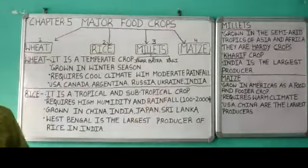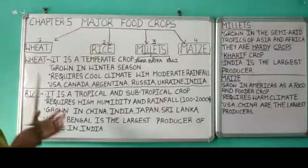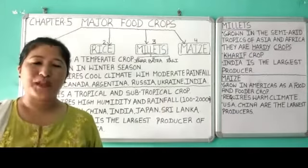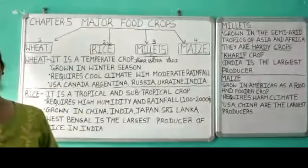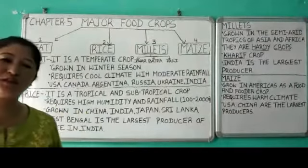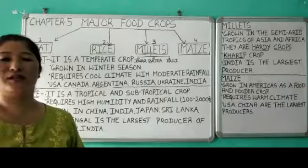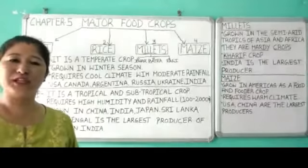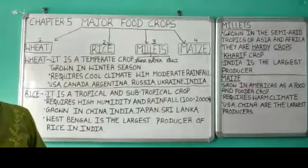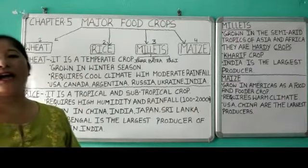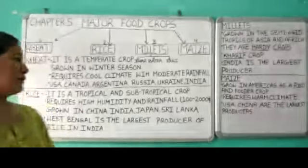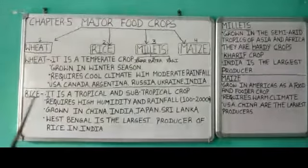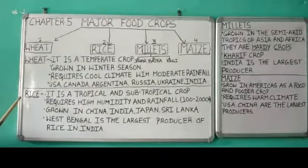The leading producers of wheat in the world are USA, Canada, Argentina, Russia, Ukraine, and India. In India, wheat is grown in the northern part of the country, especially in states like Punjab, Haryana, and Uttar Pradesh.